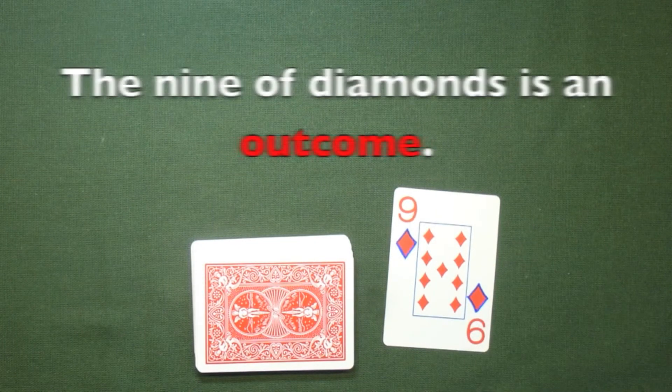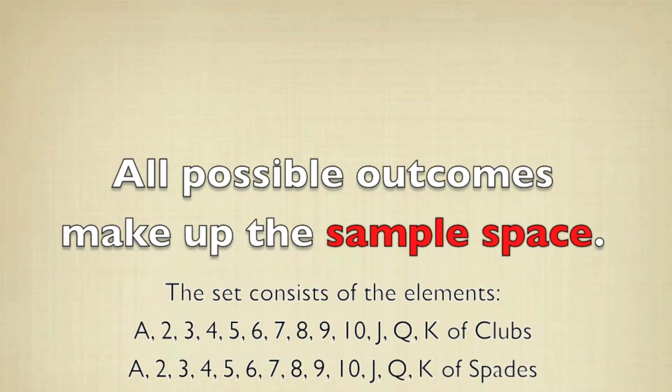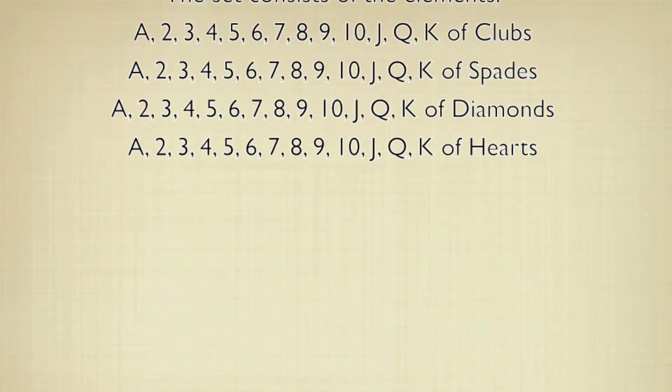The nine of diamonds, which flipped up here, is an outcome because it's one particular instance of the experiment. All the possible outcomes make up the sample space, so it's going to be any one of the 52 cards in a deck.